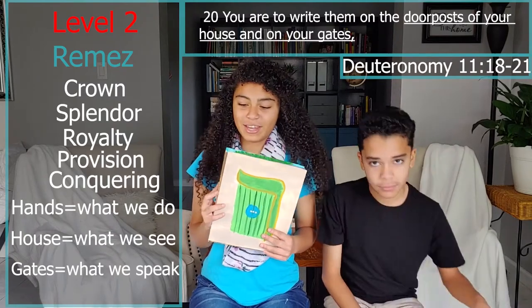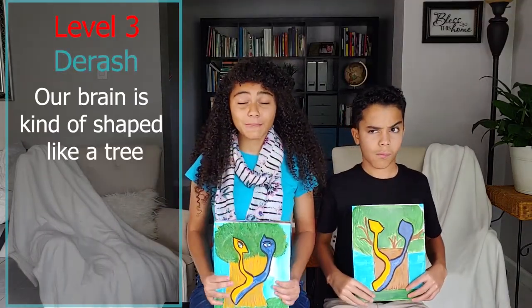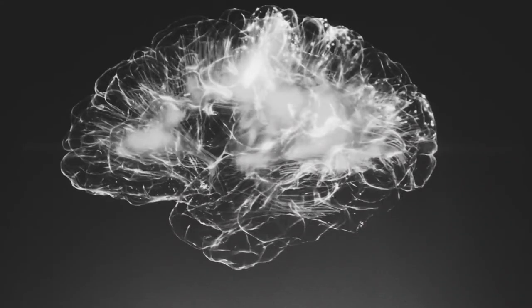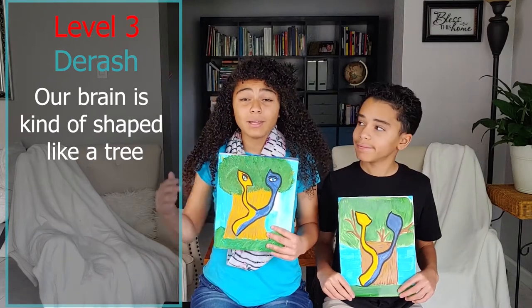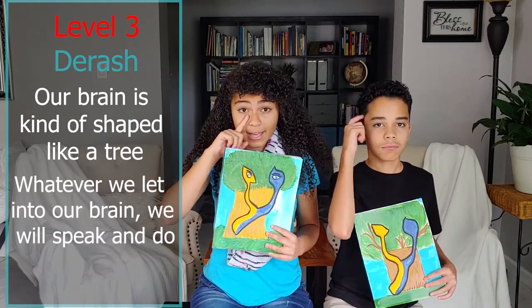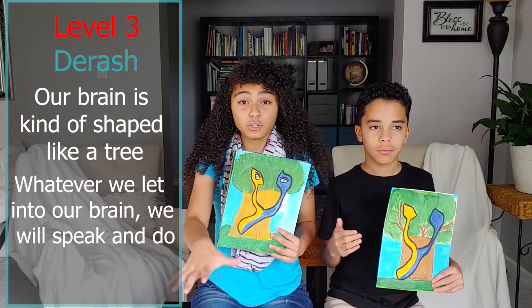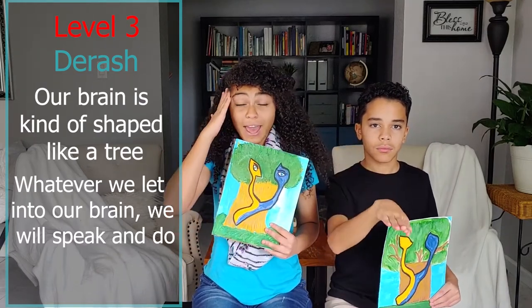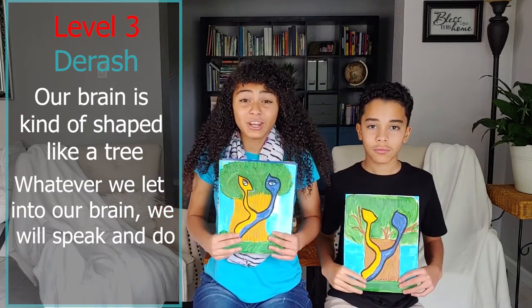Now for the third level of understanding — the drash. Did you know that our brain is kind of shaped like a tree? Our brain is like the bushy leaves and our spinal cord is like the stem of the tree that roots into our nervous system. This means that whatever we let into our brain through our eyes — whatever we let there — we're going to speak and do. So what we see, we always have to make sure that it's good and not evil.